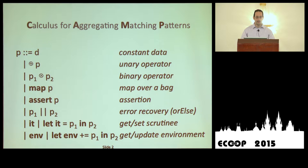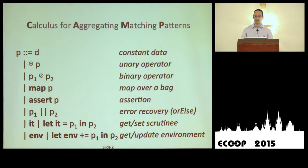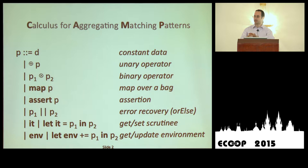We created a core calculus, CAMP, that we believe encapsulates the ideas in JRules. The basic constructs include data — integers, strings, bags, and records — as well as unary and binary operators including flatten of a list and field projection out of a record. We also have map, which allows you to operate over collections, and assertions used for pattern matching. There is always data you're matching against, accessed via the 'it' construct, and you can use assert to check conditions like equality or ordering.